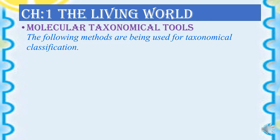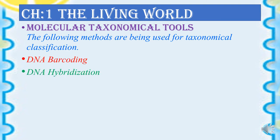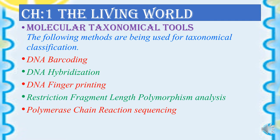Let us continue with Chapter 1: The Living World - Molecular Taxonomical Tools. When we say molecular taxonomical tools, we are going to speak about the molecular level — the DNA and the molecules making up the organisms. These tools are very useful in recognizing the characteristic features of the living organisms. The following methods are used for taxonomical classification.